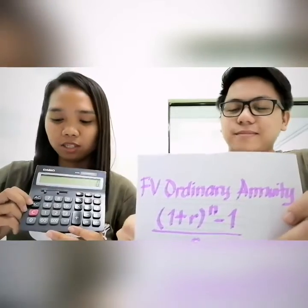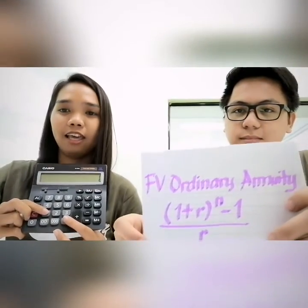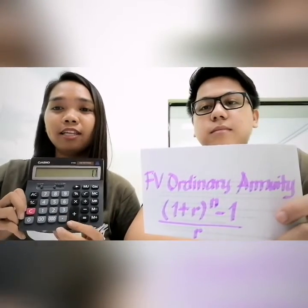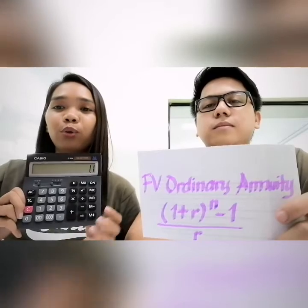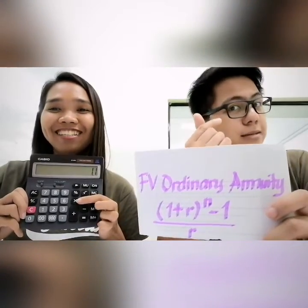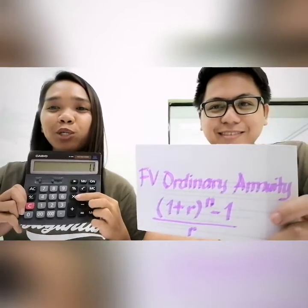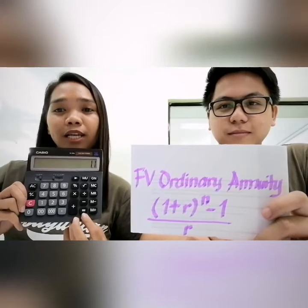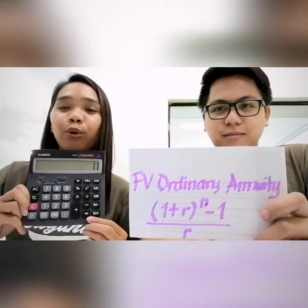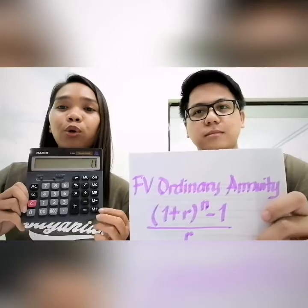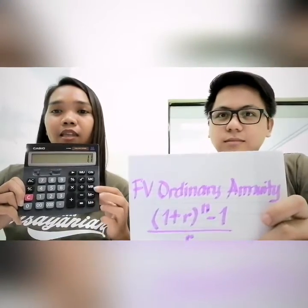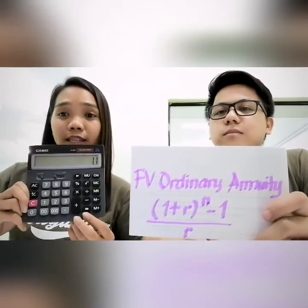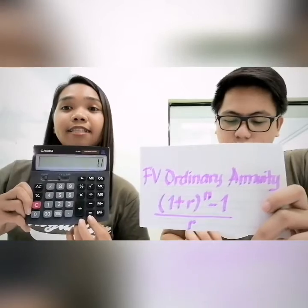Again, we start with the constant 1 and then the rate, so 1.1 for 10%. Since this is for future value, we use the multiply sign and press it twice. Then we press the equal sign. For the future value of ordinary annuity, there is no memory plus or memory recall — just use the equal sign. Since we subtract 1 from n, we only press the equal sign 9 times.